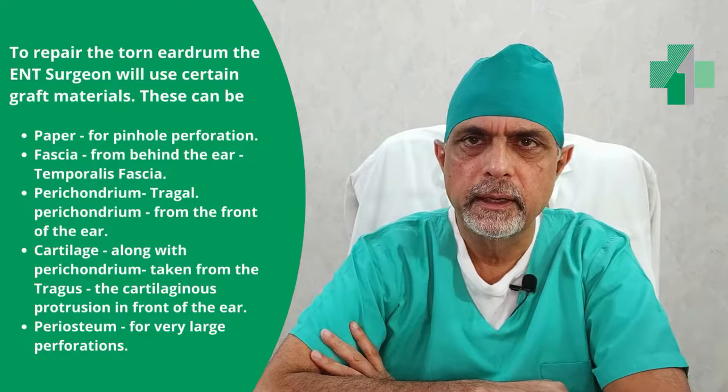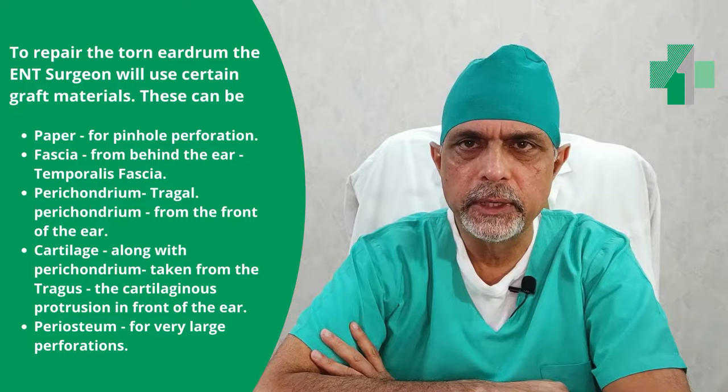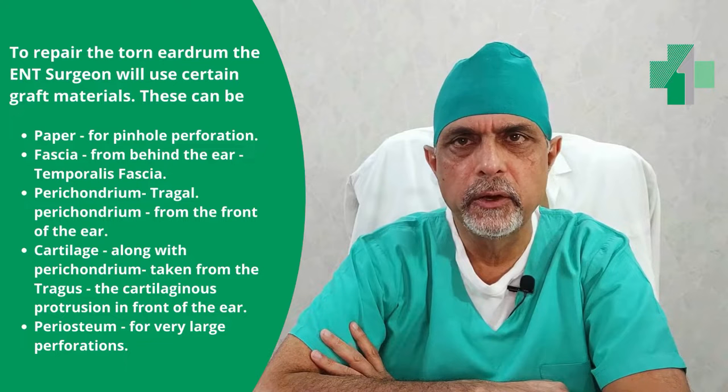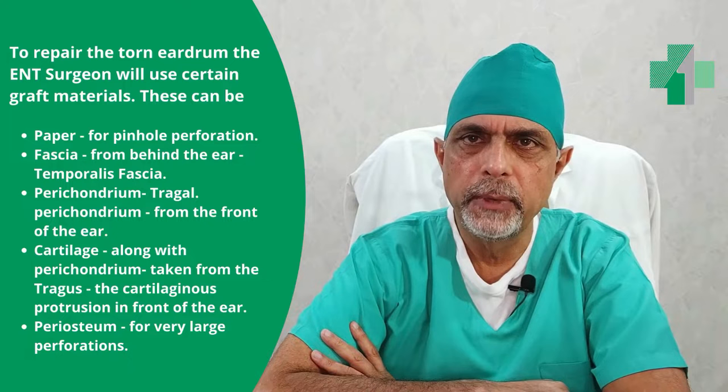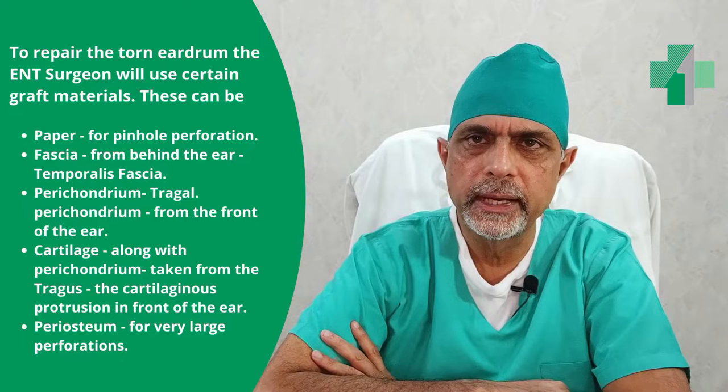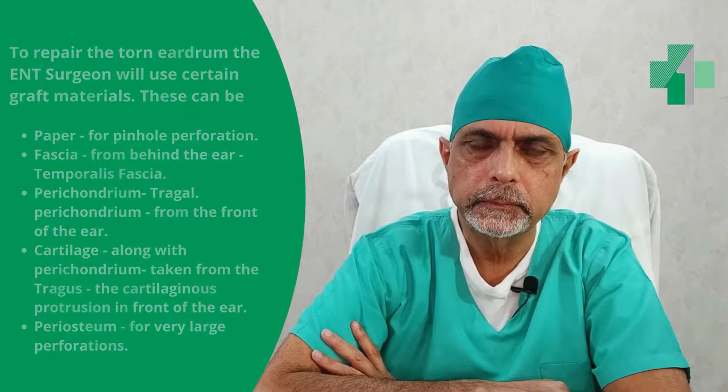In myringoplasty, we use various kinds of materials. Sometimes we use paper or similar graft material. The graft material includes temporalis fascia or tragal perichondrium. Both temporalis fascia and tragal perichondrium are tissues taken from the patient's own body, and we harvest the graft material during the same operation and use it to repair the torn eardrum.